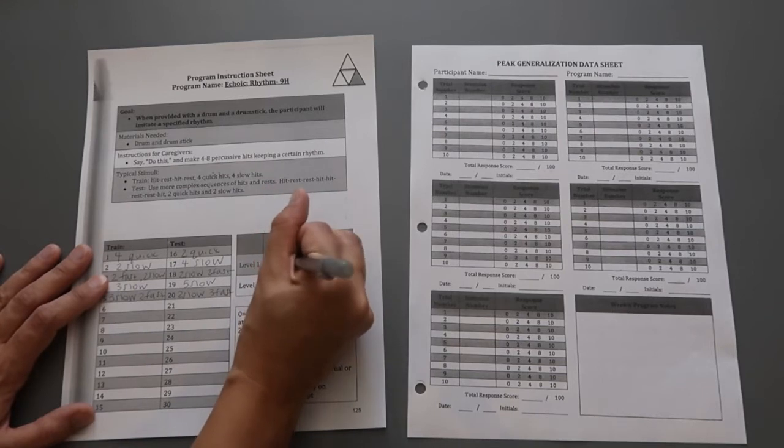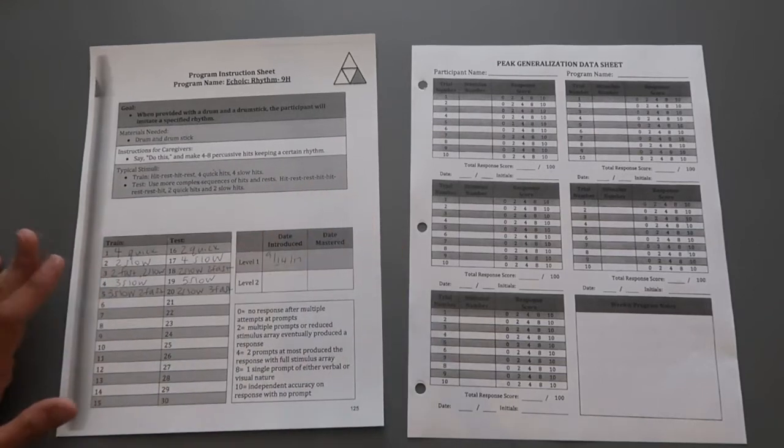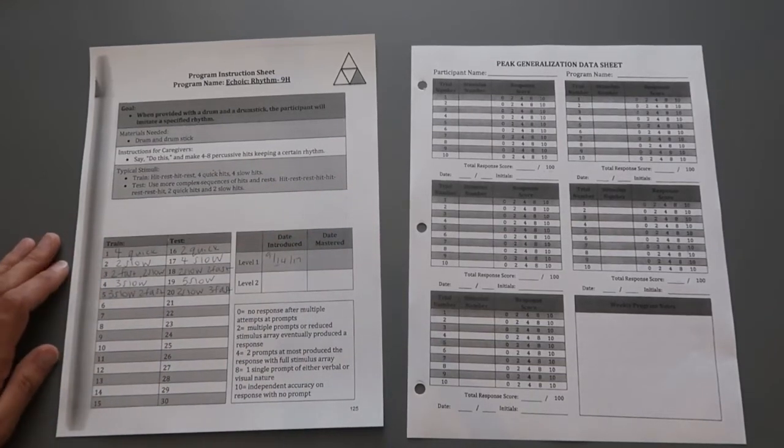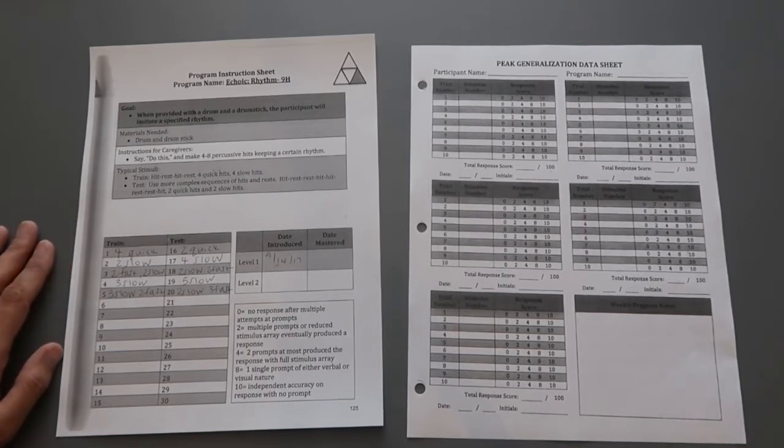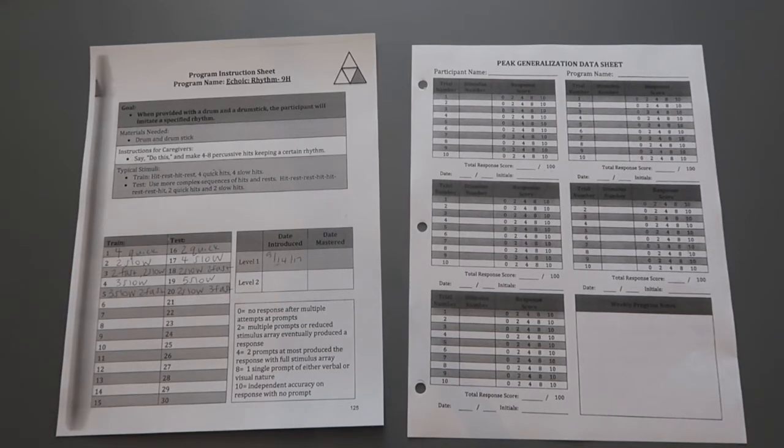So for date introduced, I would put today's date, and that would be all I'd be filling out if we're just initially introducing this program. If we were adding in other levels, things like that, I'll kind of do a different demonstration for that down the road. This is just kind of the initial program instruction sheet filling out.